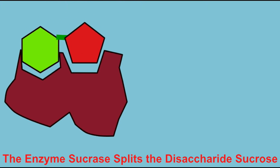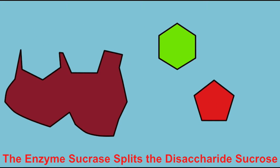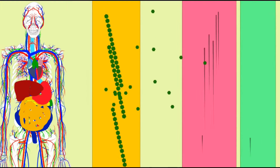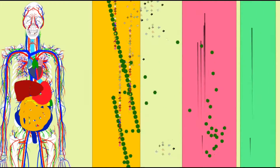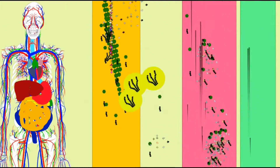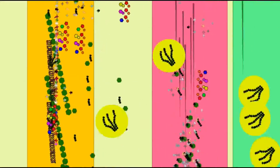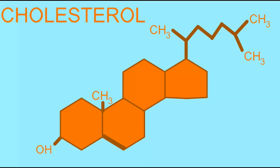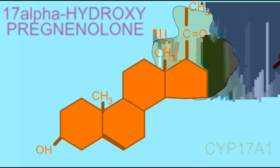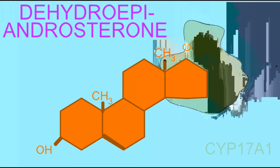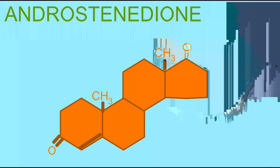So each enzyme performs a specific reaction with a specific substrate. Because there are many chemical reactions that the body performs, the body therefore needs a great number of enzymes. Many of the molecules which living things produce must be made in a series of chemical reactions — a series of steps, with each step being catalyzed by a specific enzyme.